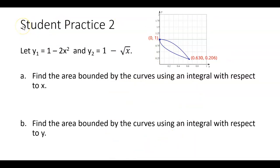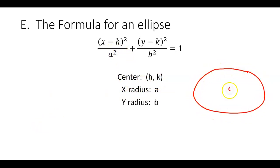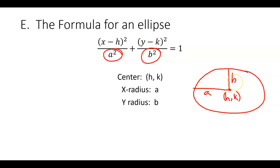Now let's do a quick Algebra 2 / Pre-Calculus review on ellipses. An ellipse is basically an oval. In the ellipse formula, h and k represent the center, the square root of the number under x gives the x-radius, and the square root of the number under y gives the y-radius.